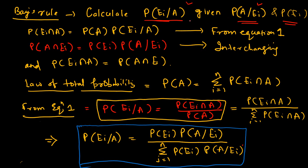If probability of A given EI is known to us and probability of EI is also known to us, we should be able to find out what is probability of EI given A. This is very useful in cases where the conditional probability of one event is known and you want to find the conditional probability of another event, when they are interrelated. Finding out the relationship between these two types of probabilities is known as the Bayes theorem.